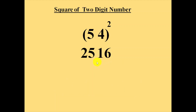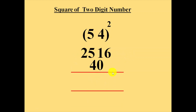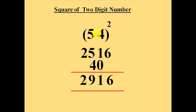We will leave 6 and write down that number below 51 like this. Then we will add these two lines like this. 6 plus 0 is 6, 1 plus 0 is 1, 5 plus 4 is 9, 2 plus 0 is 2. Finally the square of the number 54 is 2916.